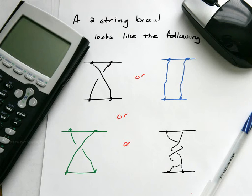It could have crossed over - here we have one, two, three crossovers. You could have all kinds of different configurations of these two strings. These are two-string braids.